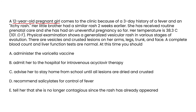Clinical vignette three: A 12-year-old pregnant girl comes to the clinic with a three-day history of fever and an itchy rash. Her little brother had a similar rash two weeks earlier. She has received routine prenatal care and had an uneventful pregnancy. Temperature is 101°F. Physical exam shows a generalized vesicular rash in various stages of evolution — vesicles and crusted lesions on her arms, legs, trunk, and face. CBC and liver function tests are normal. The question asks what advice to give regarding her pregnancy.